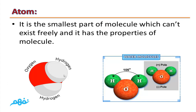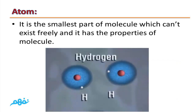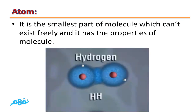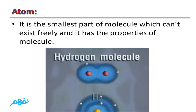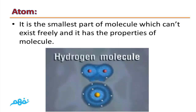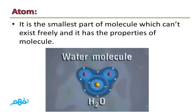This one is called a water molecule. It consists of one oxygen atom and two hydrogen atoms. When these two hydrogen atoms combine together, they form a hydrogen molecule. When these two hydrogen atoms combine with another oxygen atom, they will form a water molecule. So each water molecule is formed from two hydrogen atoms and one oxygen atom.